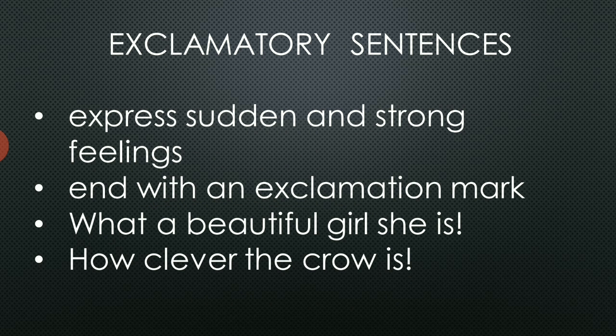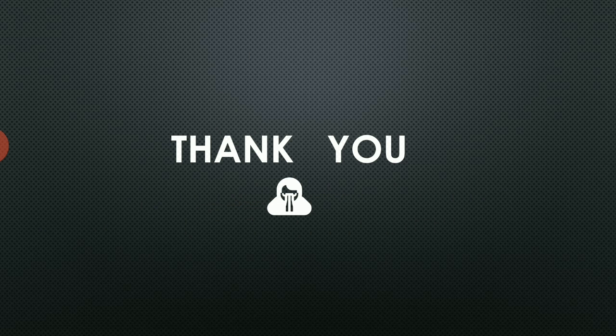Similarly, for 'how' exclamatory sentences: 'How clever the crow is!' — formed by 'how' followed by the adjective 'clever,' then the noun, and at the end the auxiliary verb, followed by an exclamation mark. Always remember, if you miss any punctuation mark, the sentence will be grammatically wrong, so be careful with punctuation in the kinds of sentences. I would now conclude today's session — go through the video once again, learn the structures properly, and revise the topic thoroughly.